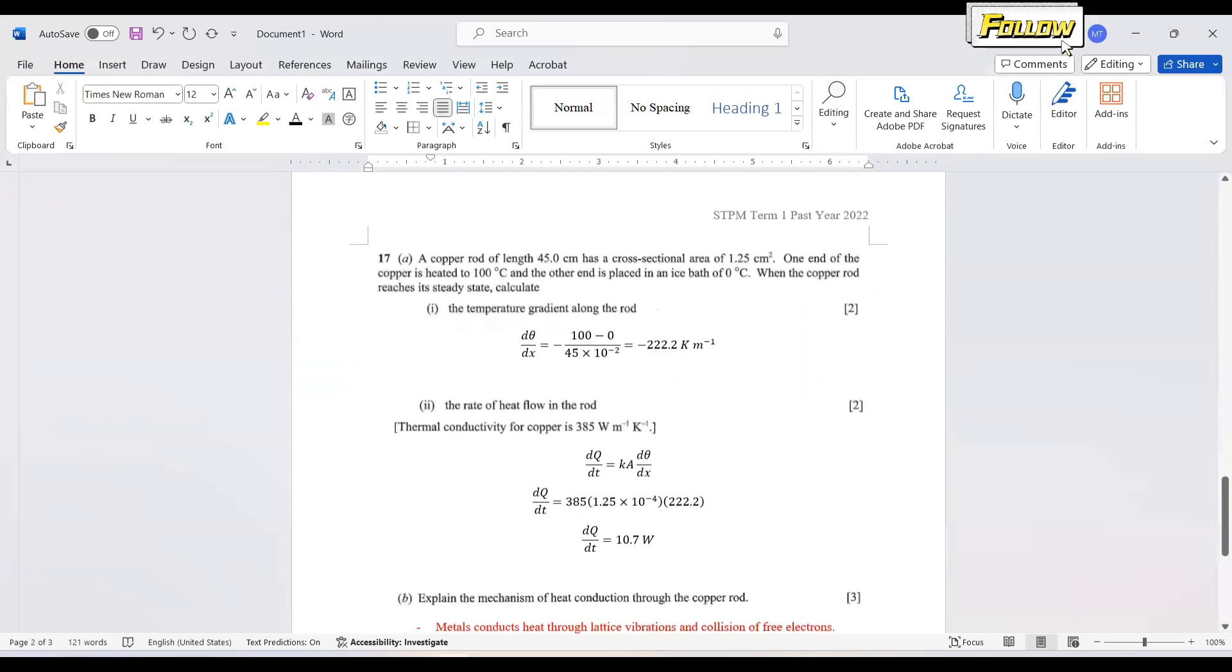We move on to question 17. A copper rod of length 45 centimeters has a cross-sectional area. One end of the copper is heated to 100 degrees Celsius and the other end is splashed in an ice bath of 0 degrees Celsius. When the copper rod reaches its steady state, calculate the temperature gradient, sample dθ/dx.